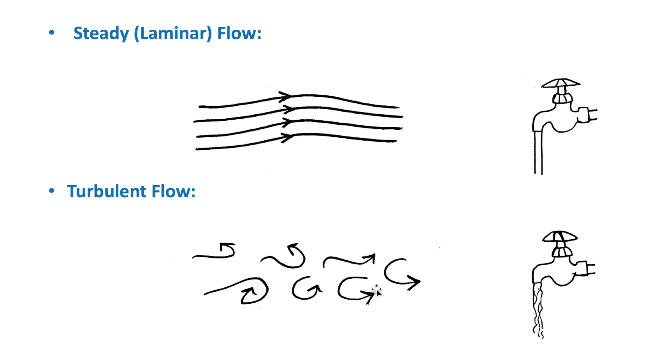So, in a turbulent flow, there is no steady-state pattern. Instead, the pattern of flow changes continuously. You can see the transition from laminar to turbulent flow in a tap of water. As the flow reaches a critical speed, it turns turbulent.